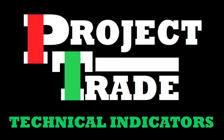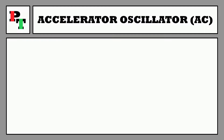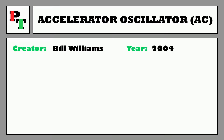Hello everybody and welcome to Project Trade. This is the Technical Indicator Show and in this one we are taking a look at the Accelerator Oscillator — an indicator coming to us from Bill Williams in his 2004 book, Trading Chaos.